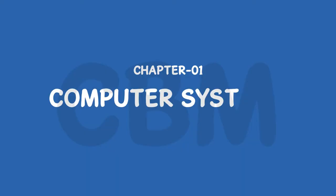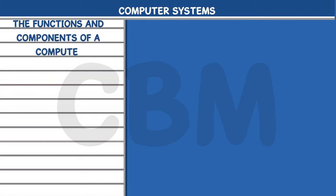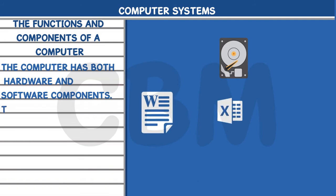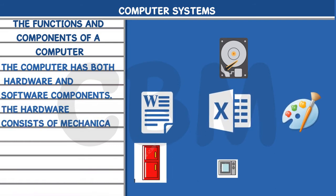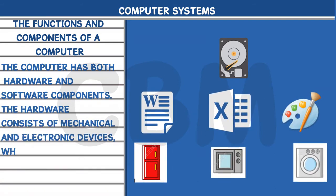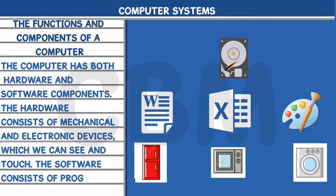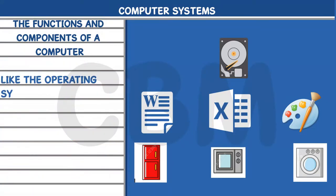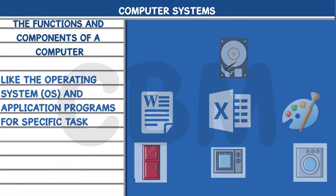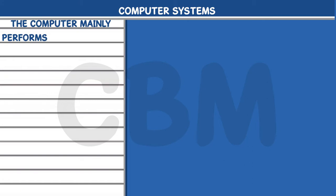Chapter 1: Computer Systems. The Functions and Components of a Computer. The computer has both hardware and software components. The hardware consists of mechanical and electronic devices which we can see and touch. The software consists of programs, like the operating system (OS), and application programs for specific tasks. The computer mainly performs the following four functions.